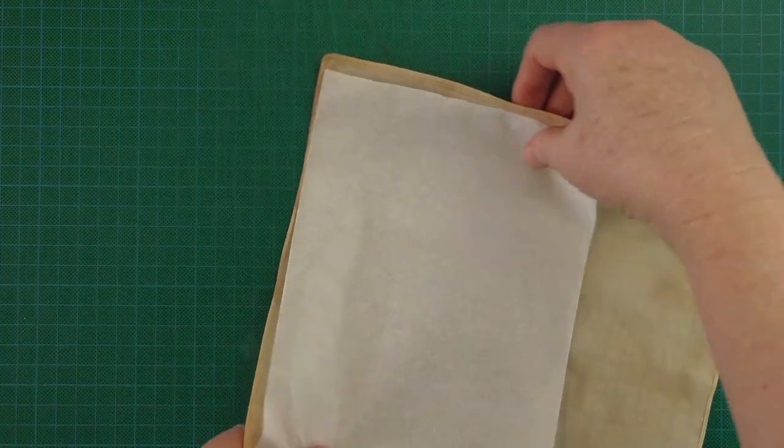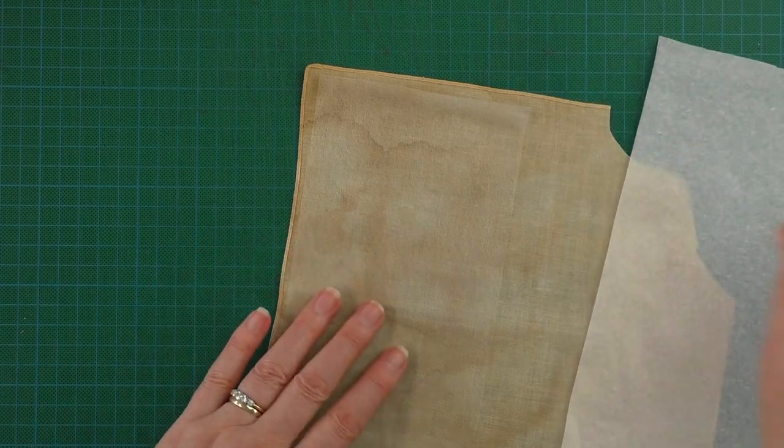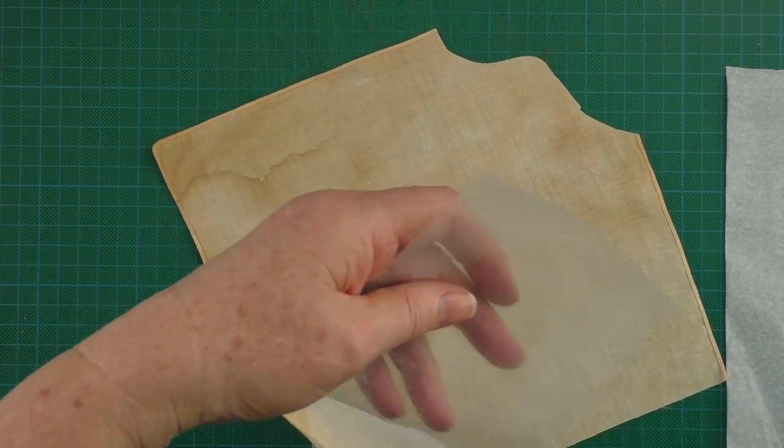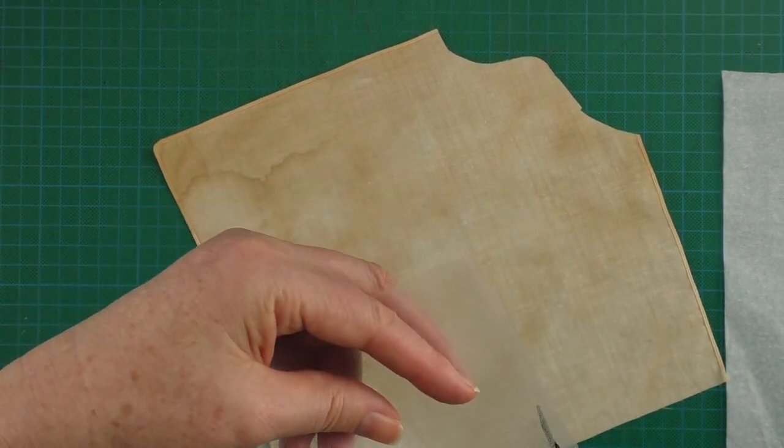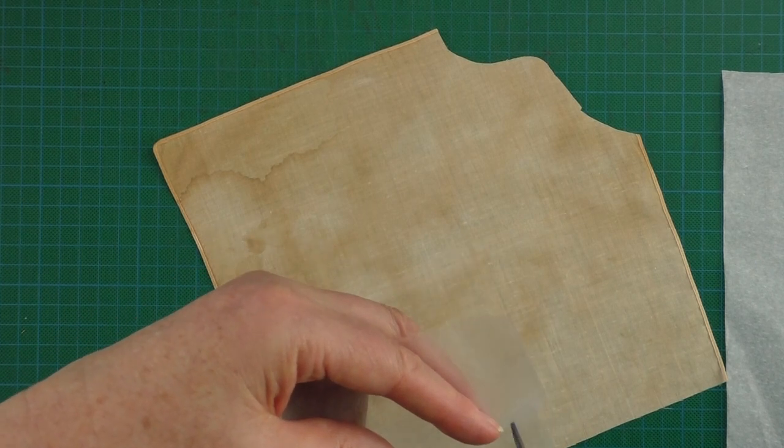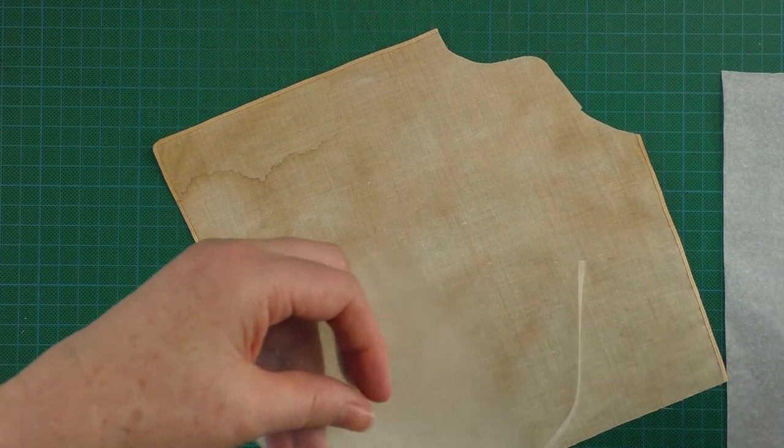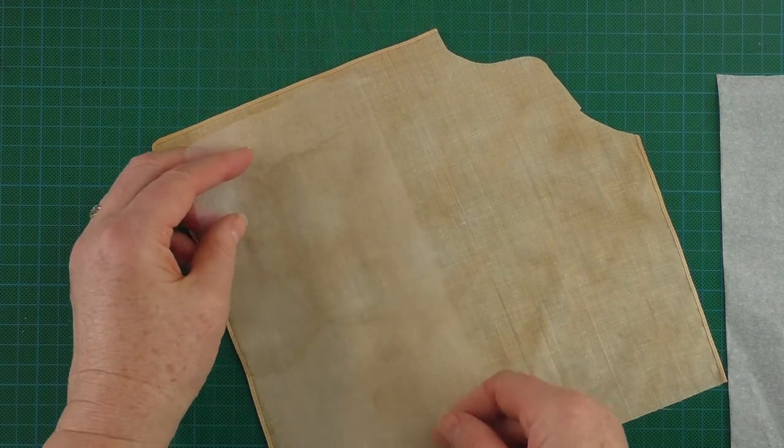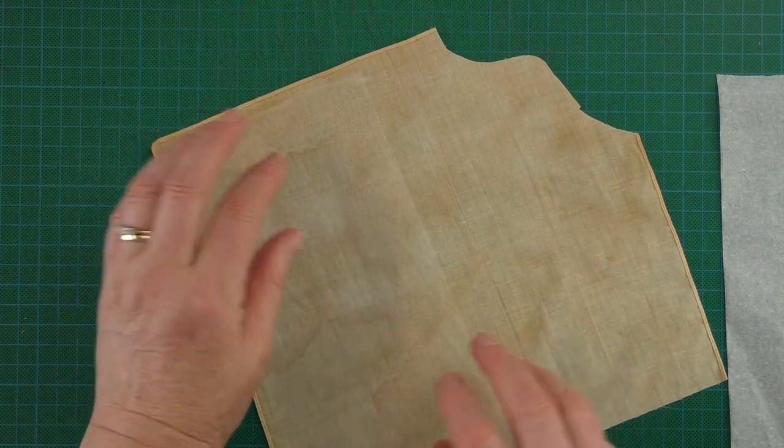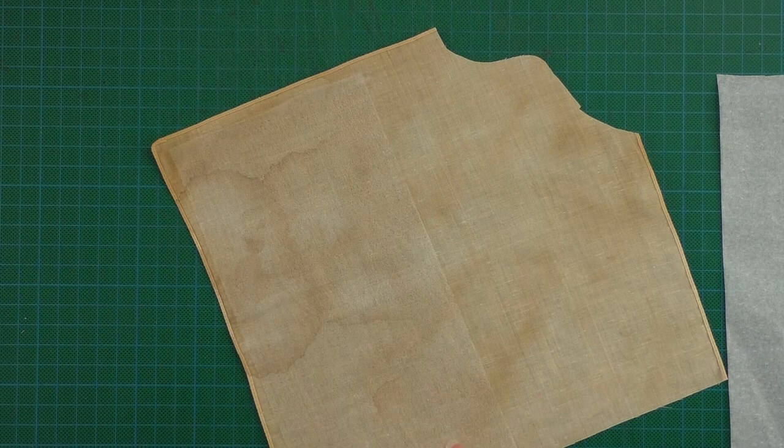So I'll just iron this on and show you what it looks like. I don't need it to be quite that long, so I'm just going to shorten it a little bit, because you don't want to get this stuff on your iron. Okay, so I'm going to put that there, and I'm going to fuse that.